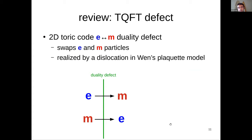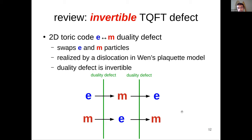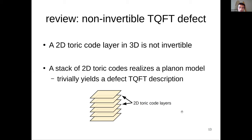What do I mean by a defect? In Toric code, one simple kind of defect is the E and M exchange duality defect — a line defect where an E particle crossing it becomes an M particle, and vice versa. The simplest way to realize this is to make a Toric code with a dislocation. One property of this defect is that it's invertible: two of them brought together cancel out, since swapping particles twice does nothing.